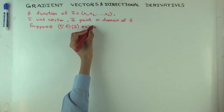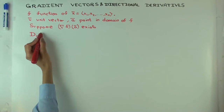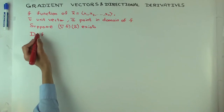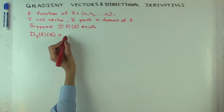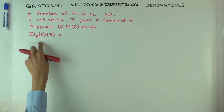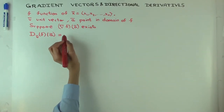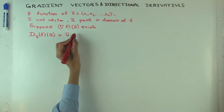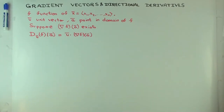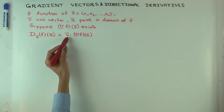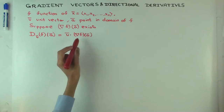Now, the claim is that the directional derivative of f in the direction of u at the point a is a scalar — and that scalar is the dot product of the unit vector u along which we are doing the differentiation, dotted with the gradient vector.